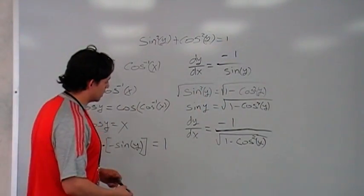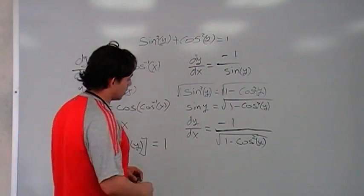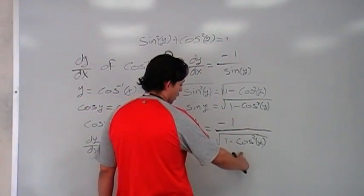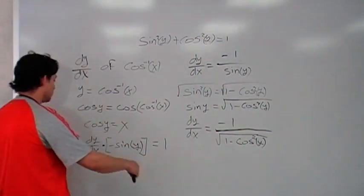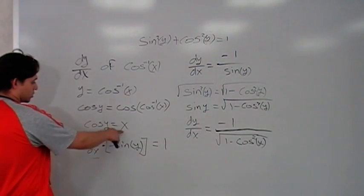Okay, we're pretty much done, but we still have a y, but we know our cosine, cosine of y is just equals x.